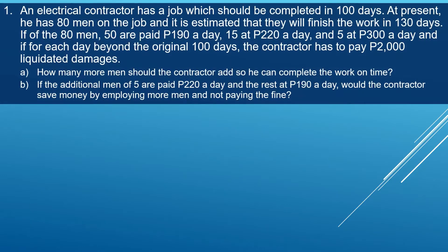For the first example, an electrical contractor has a job which should be completed in 100 days. At present he has 80 men on the job and it is estimated that they will finish the work in 130 days. Of the 80 men, 50 are paid 190 pesos a day, 15 at 220 pesos a day, and 5 at 300 pesos a day. For each day beyond the original 100 days, the contractor has to pay 2,000 pesos in liquidated damages. How many more men should the contractor add so he can complete the work on time?